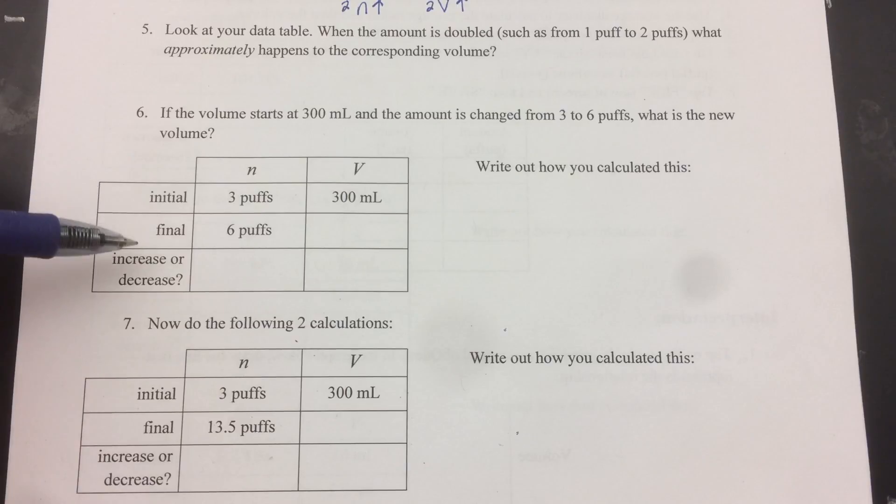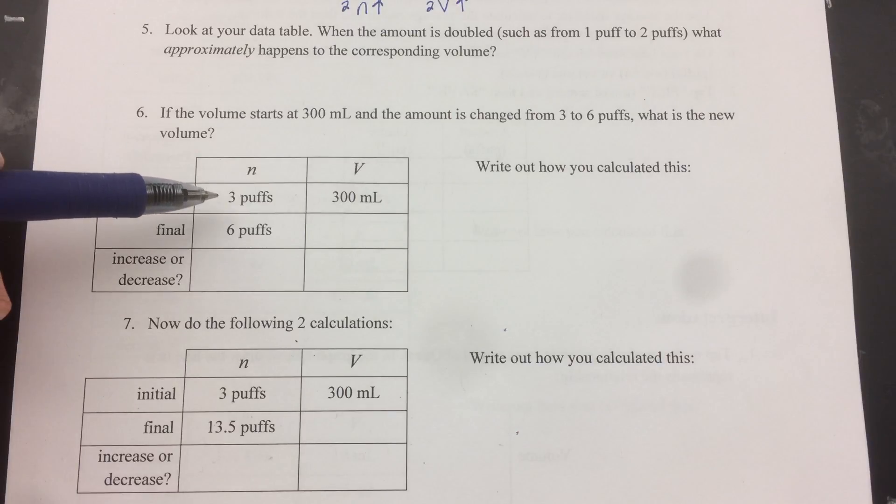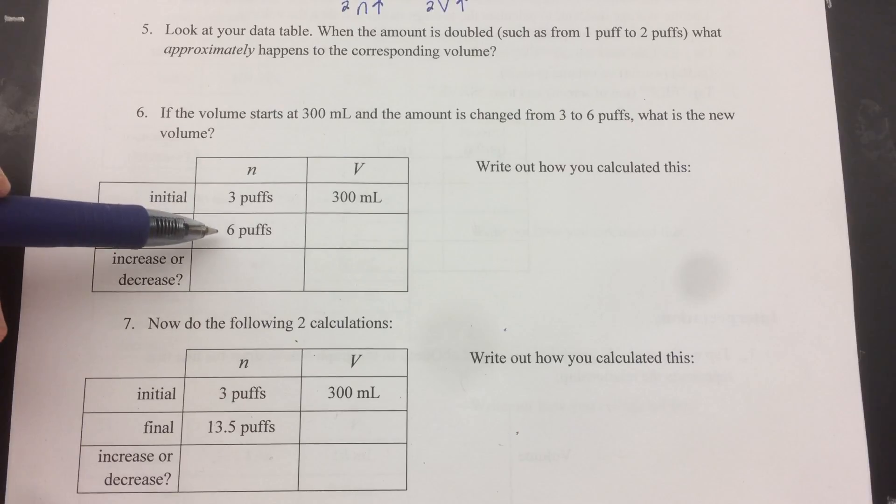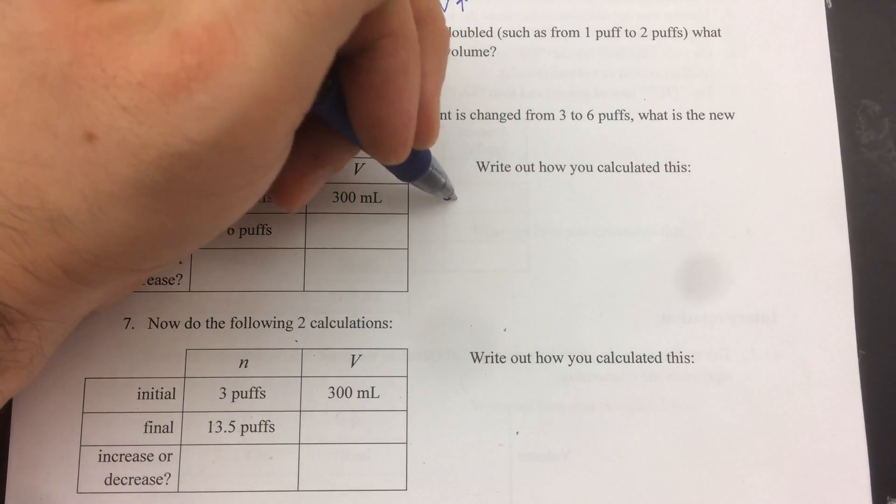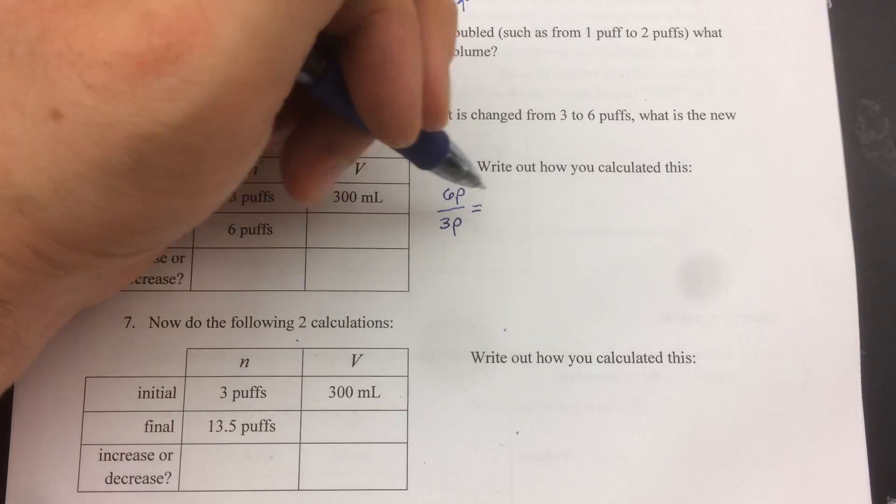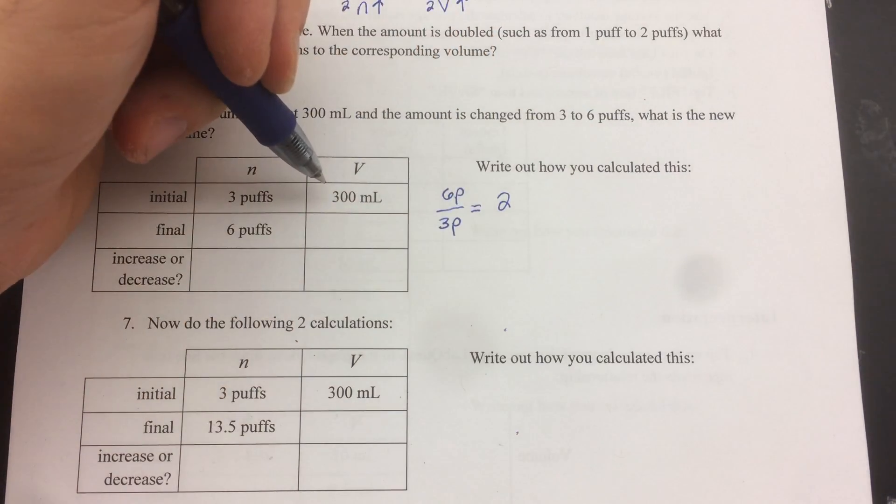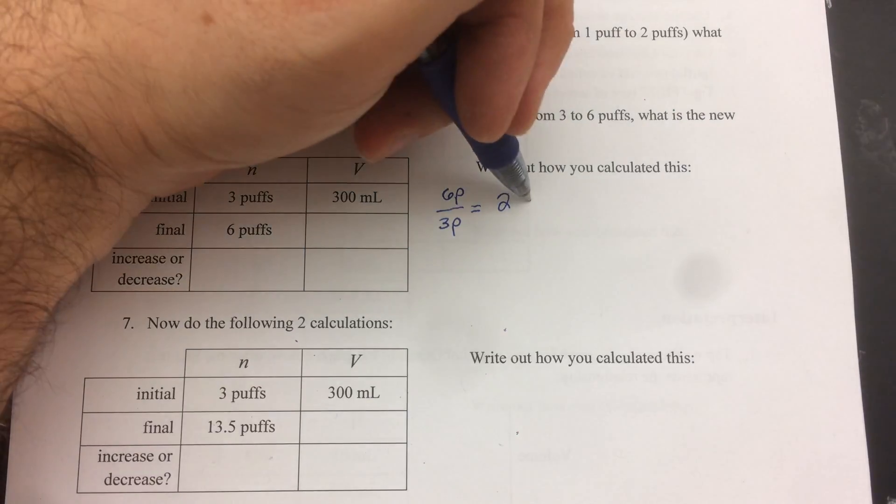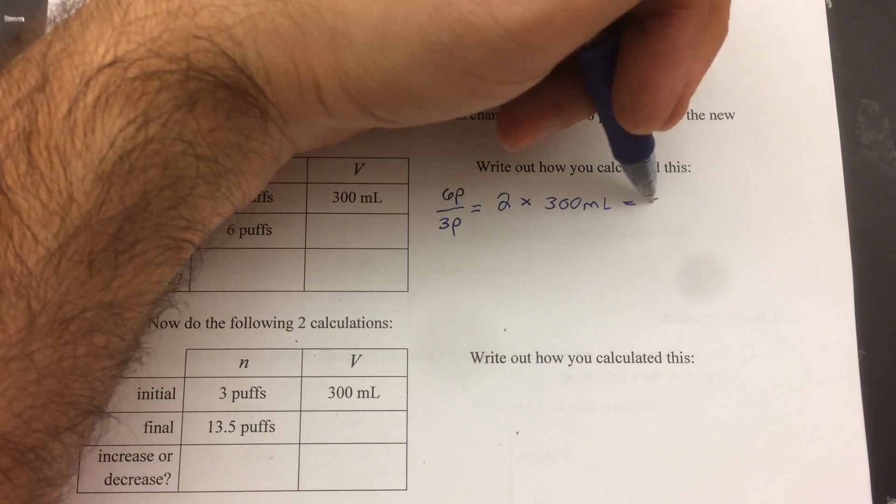In this first one, we have a starting and a final amount, and we're going to calculate the final volume. So in this one, the amount goes from 3 to 6 puffs. So we need to know what factor that goes up by. And the way we can find that is by dividing the final by the initial. So 6 over 3. So 6 puffs over 3 puffs equals a factor of 2. This is how many times the volume is going to change by. So effectively, it's going to double. So 2 times the volume, 300 milliliters, equals 600 milliliters.